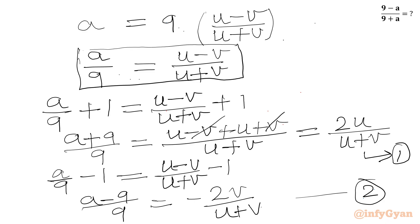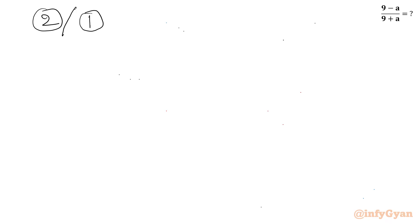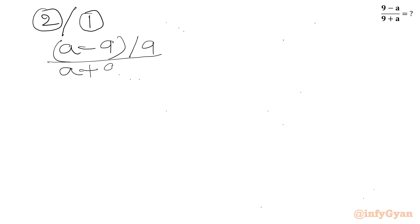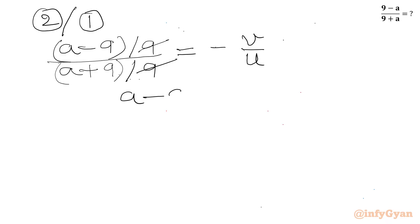As per our required expression, minus is in the numerator. So I will write equation 2 divided by equation 1. So I will write a minus 9 over 9 in the LHS, over a plus 9 over 9. The 9s cancel, so finally we get a minus 9 over a plus 9, which will be equal to minus v over u.